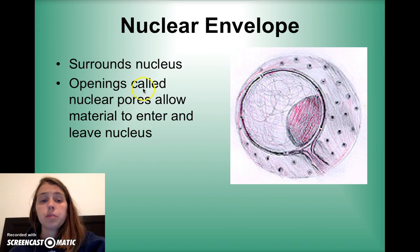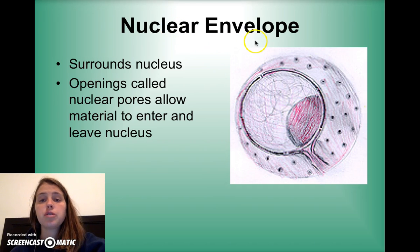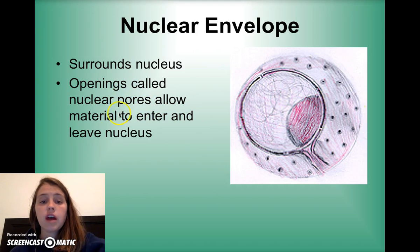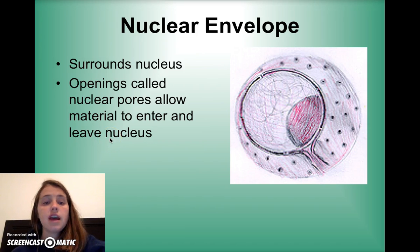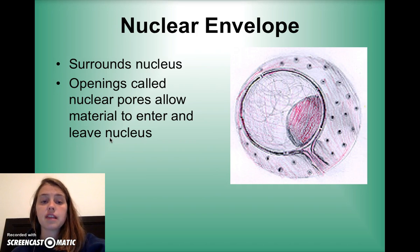The nuclear envelope surrounds the nucleus just like the plasma membrane goes around the cell. It has openings called nuclear pores, or nuclear holes, that allow material to enter and leave the nucleus. It's very selective about what gets in, because your DNA is in there and your cell wants to protect your DNA from anything that might be bad.